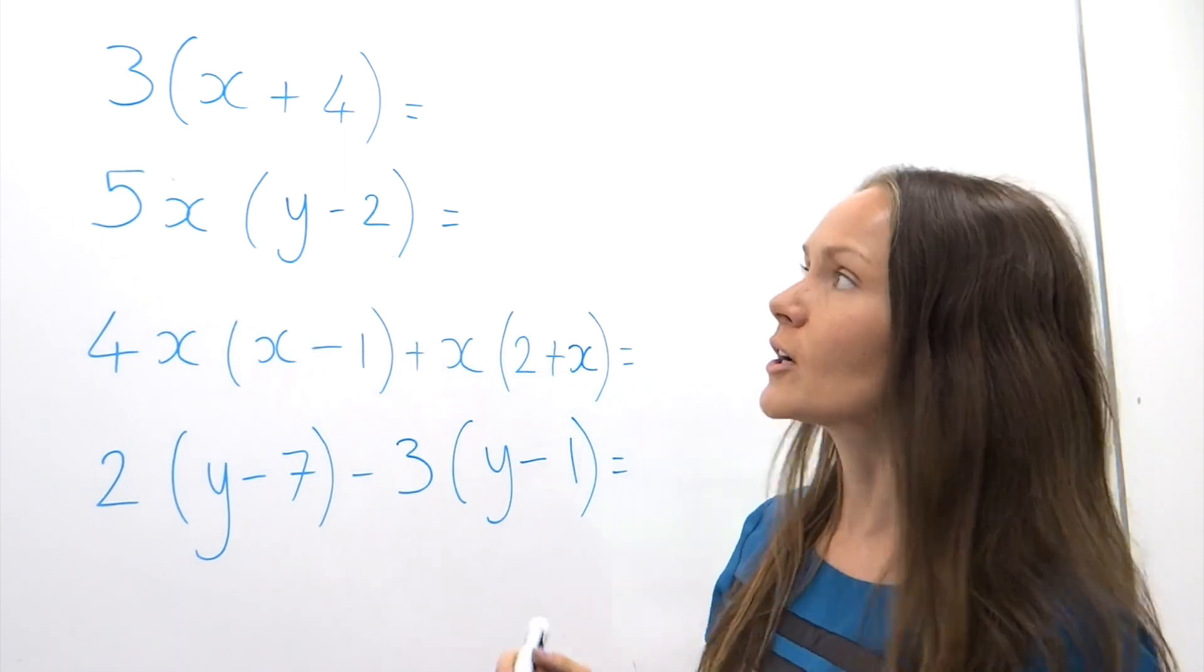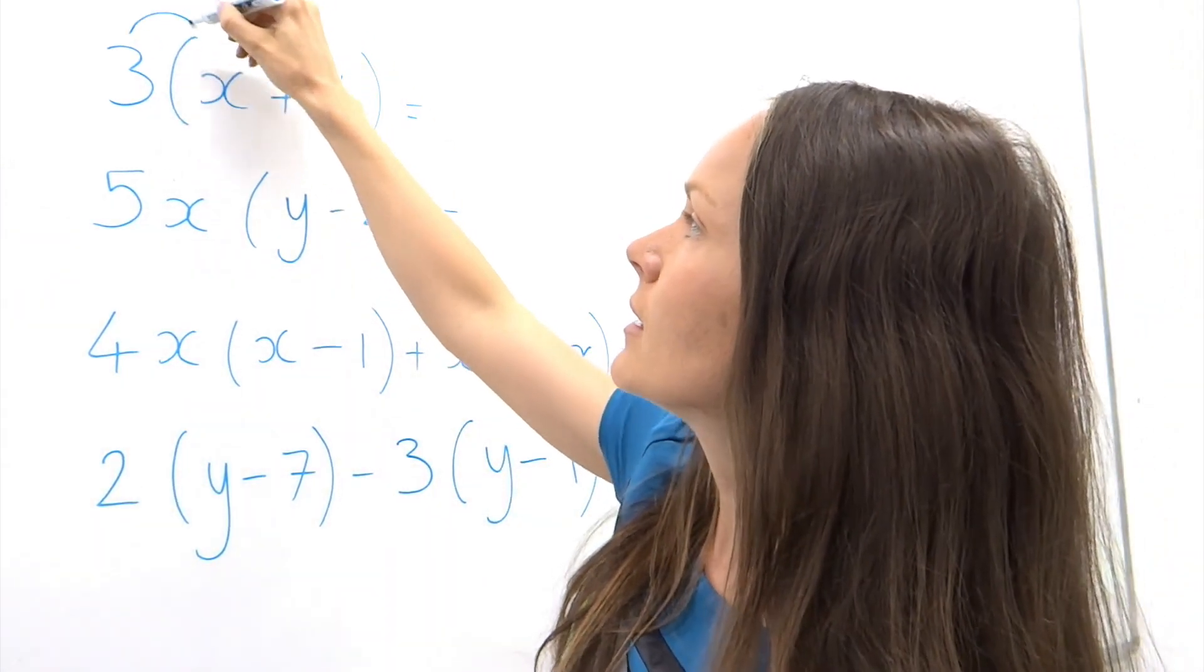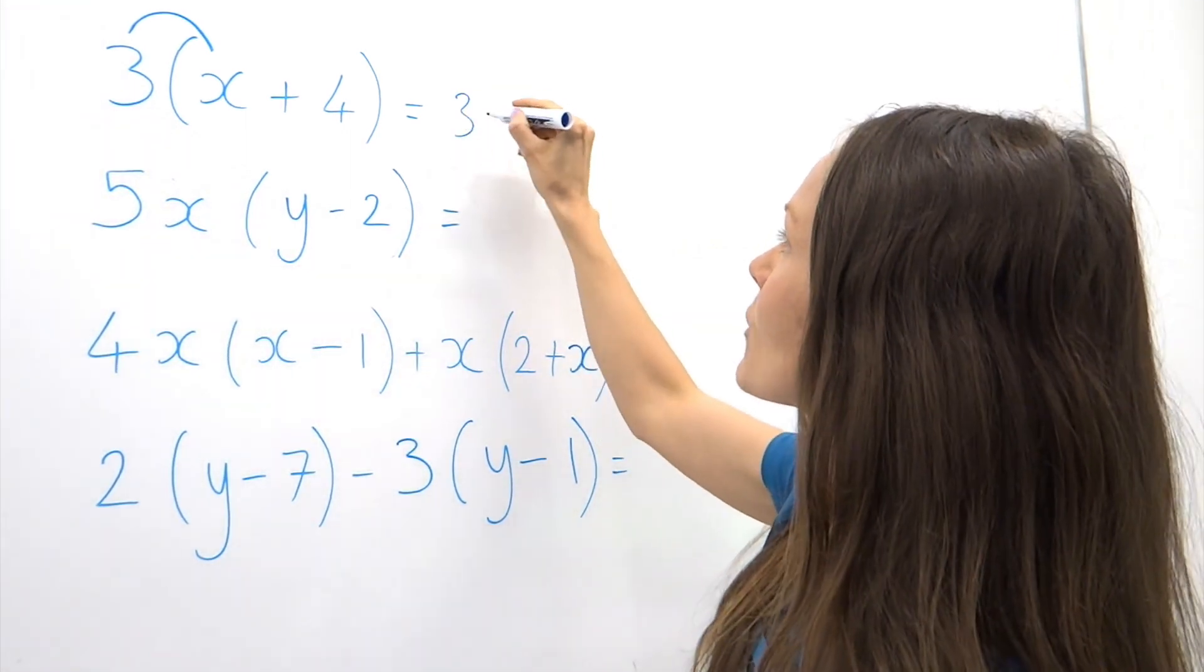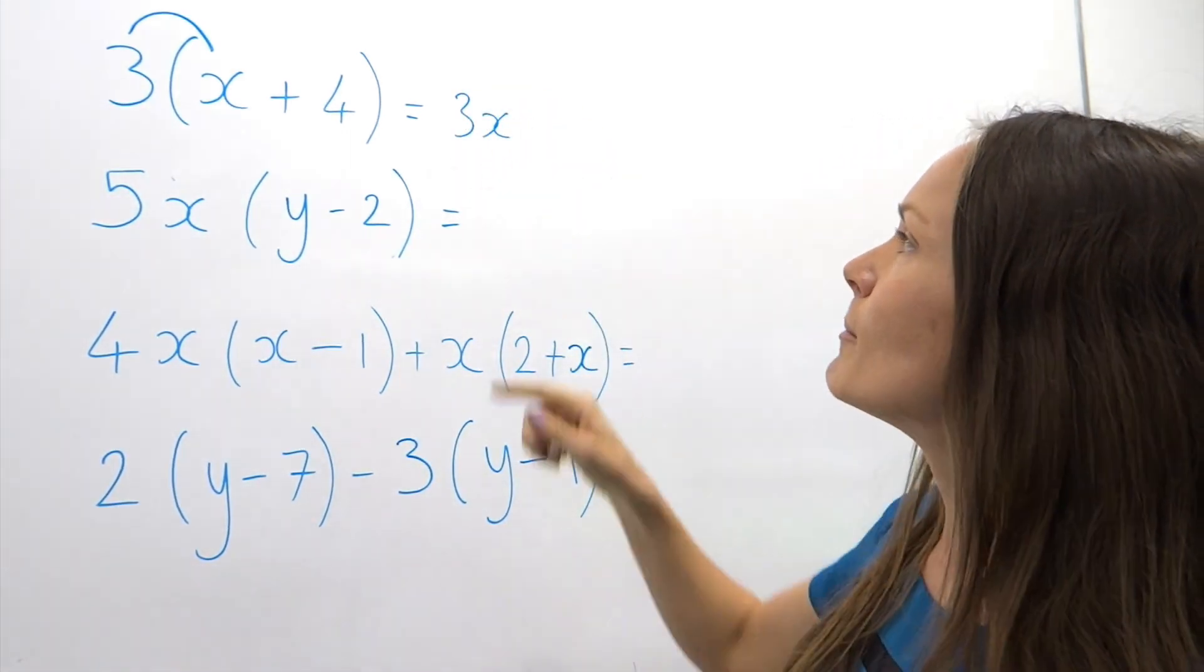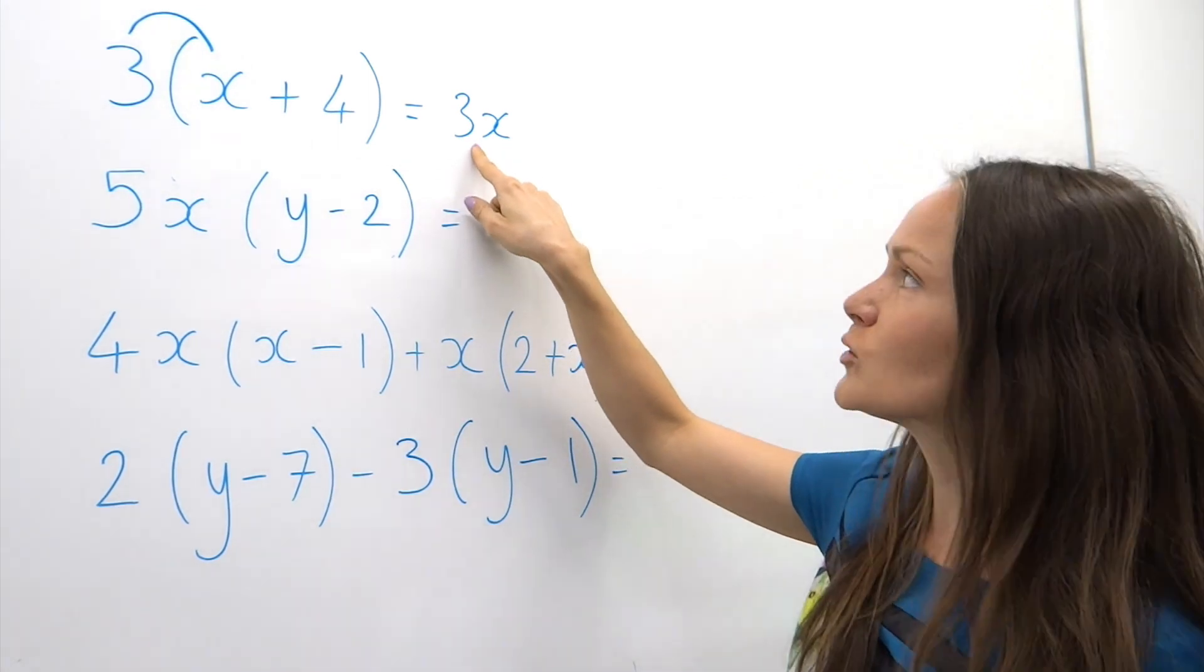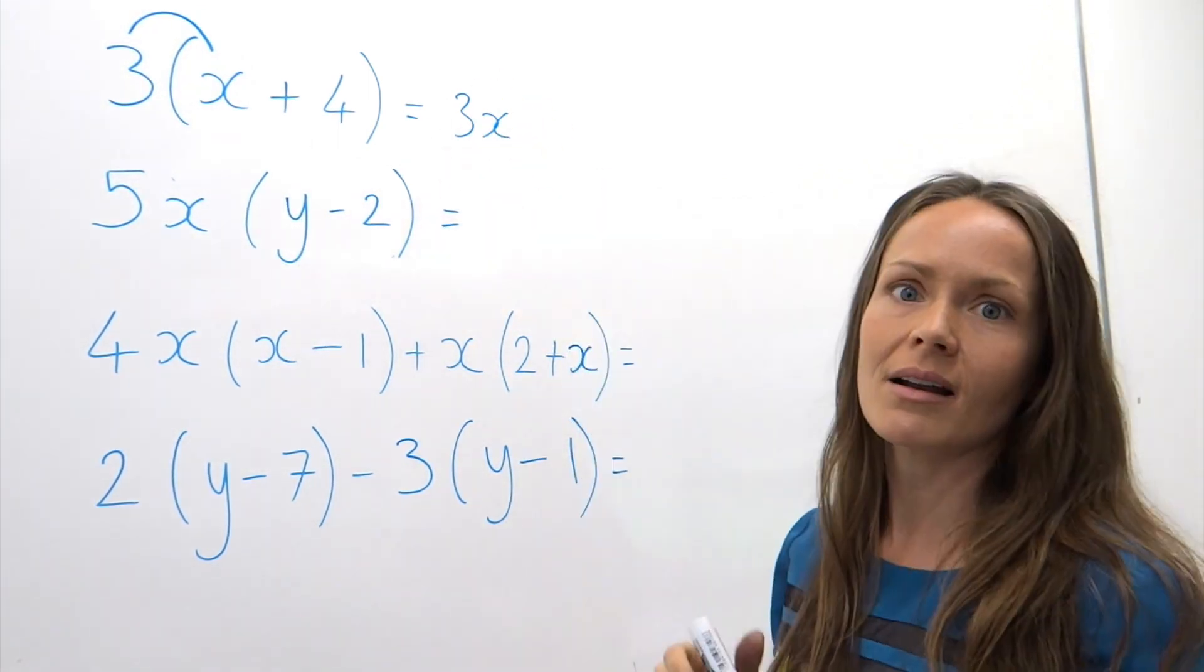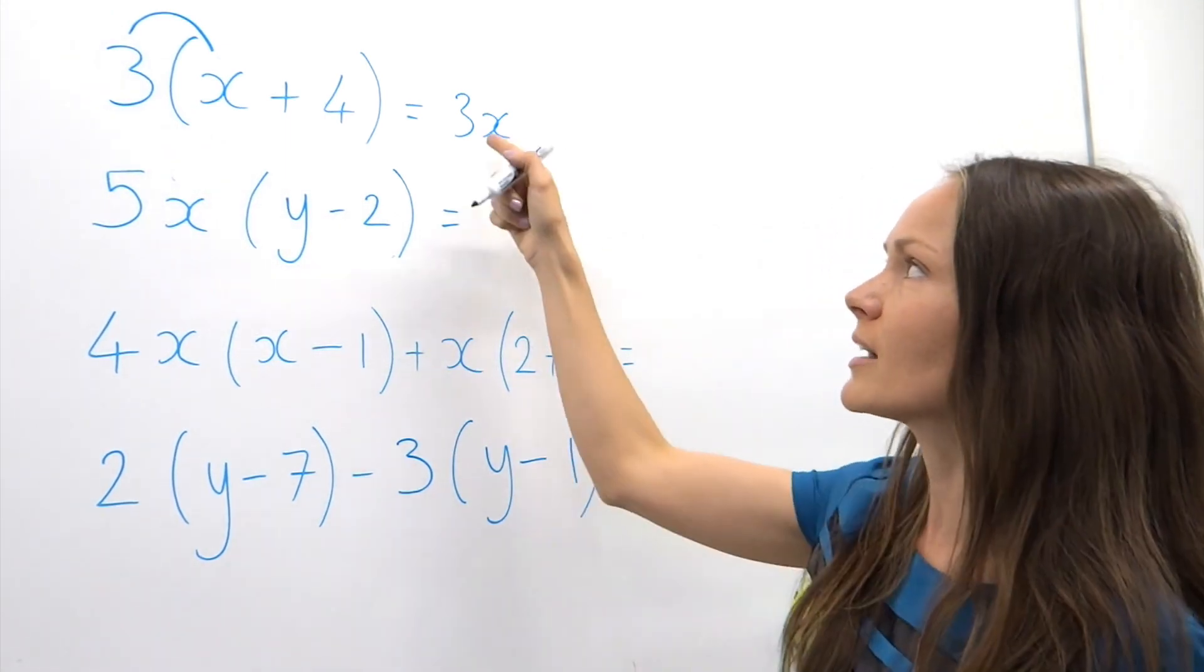In the first question, we're going to multiply 3 by x. So 3 multiplied by x is just 3x. Remember, when we're multiplying these together, we don't have to write the multiply sign between them. We just group them together. When they're grouped together like this, it just means they're being multiplied together.